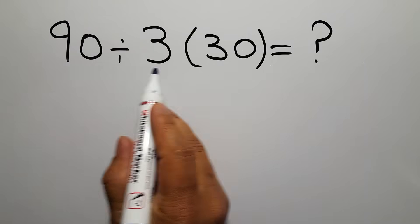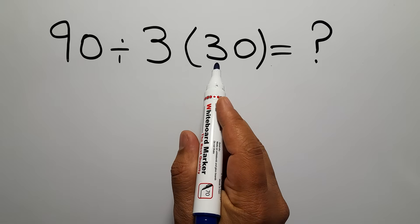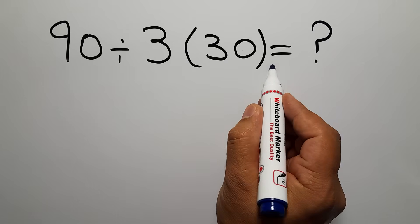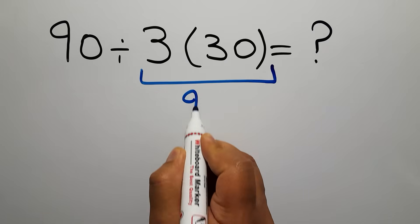90 divided by 3 then times 30. 3 times 30 gives us 90.